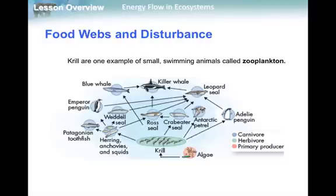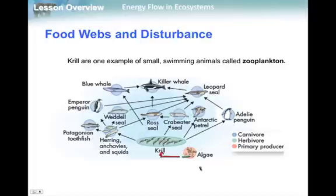Let's look at another food web, specifically in an ocean. Again, we have all levels there. We have primary producers, and those primary producers are eaten by krill. This herbivore, krill, becomes very important. These small swimming animals are zooplankton. Krill becomes very important because they eat these small organisms, zooplankton, and that's the base of this entire food chain.